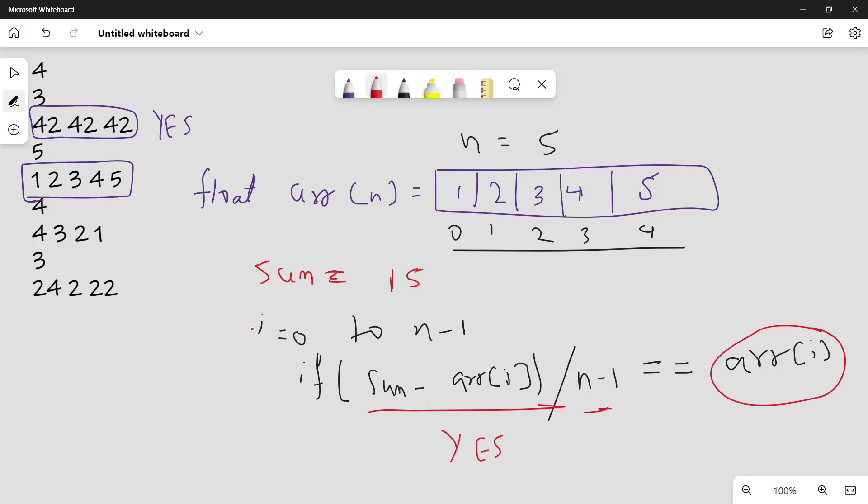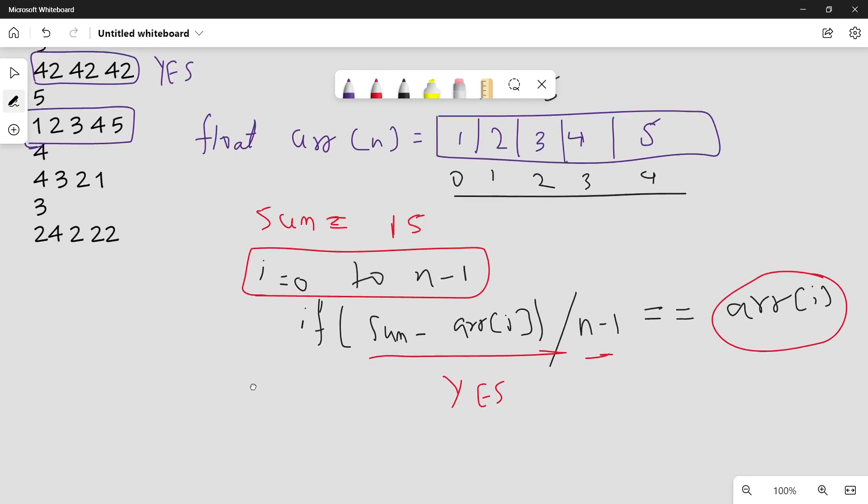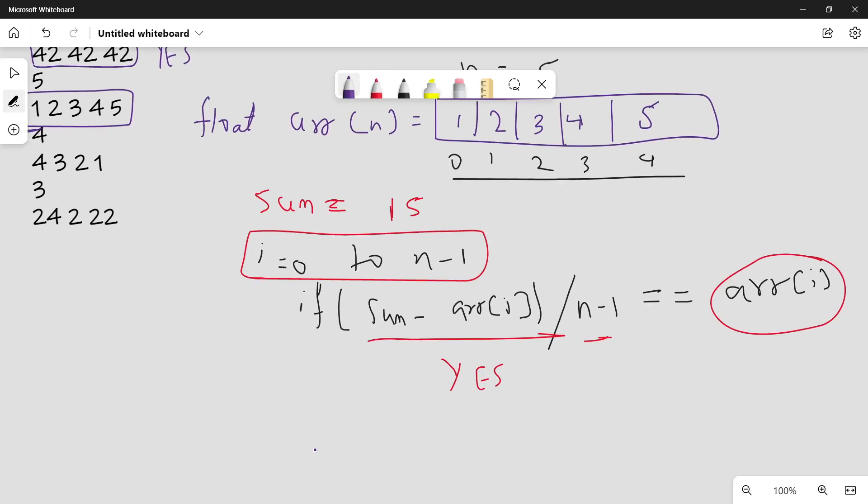So iterate over 0 to n minus 1 and for all values check this, and if any condition satisfies you will print yes, otherwise you will print no. This is the loop, this is the condition checking, and after the loop if no condition is met, you will print no.